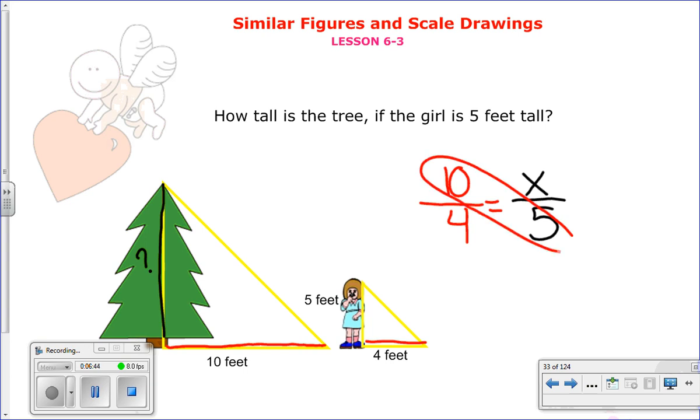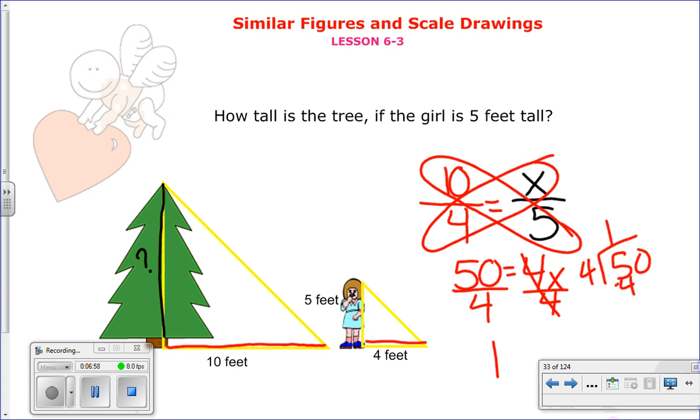And now I do cross products. 10 times 5 is 50. 4 times x is 4x. Simplify by going by 4. And if you solve this one out. And I'm just going to do some work to the side. You get 12 and a half. So the tree is 12.5 feet tall. And again, we use indirect measurement. Because we had to use a tree versus a girl to try to solve this.